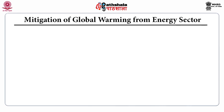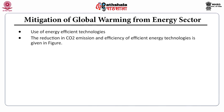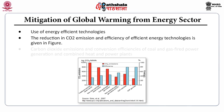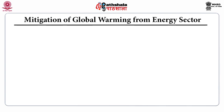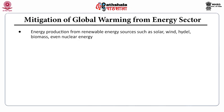For mitigation measures against global warming from the energy sector, use of energy-efficient technologies is key. The reduction of carbon dioxide emissions and efficiency of energy-efficient technologies is shown in the figure, including various CO2 emissions and conversion efficiencies of coal and gas-fired power generation and combined heat and power (CHP) plants. In CHP, the efficiency is higher with the least emission of carbon dioxide. This graph shows greenhouse gas emissions from various electricity generation systems, including renewable energy sources such as solar, wind, hydel, biomass, and even nuclear energy.